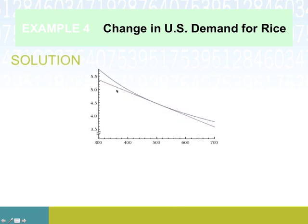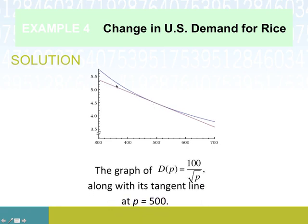So you can see that the tangent line itself is less accurate, not as close to the actual demand curve (the one in purple), the farther away from 500 we get. But right around 500, it's a pretty good approximation. There's the graph of 100/√p in purple, along with the tangent line we just figured out.